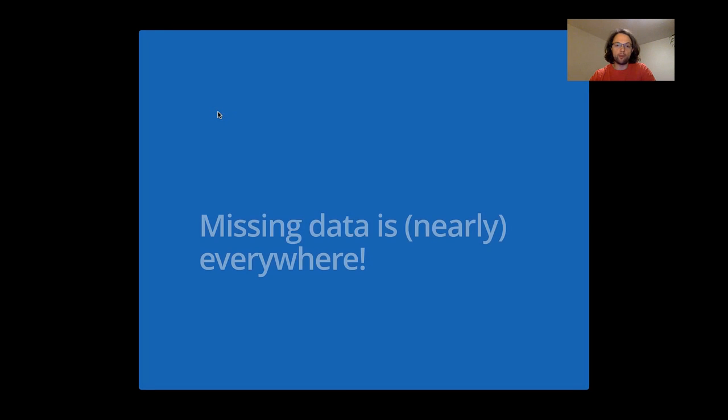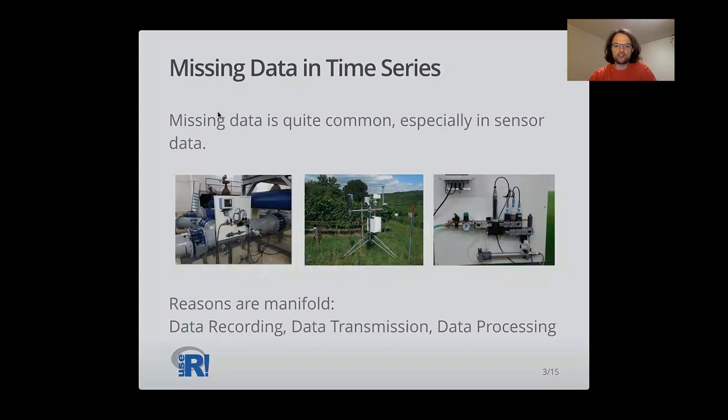As many of you probably know, missing data is nearly everywhere. And that's also true for time series. Especially in sensor data, missing data is quite common. The reasons are usually manifold: problems with data recording, problems with data transmission, or problems with data processing.